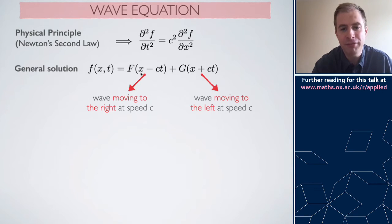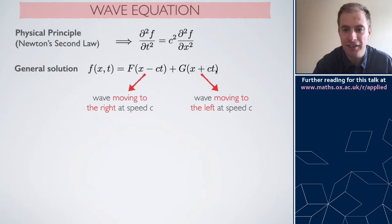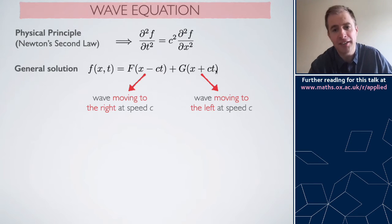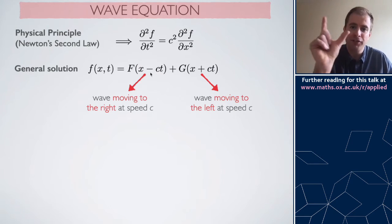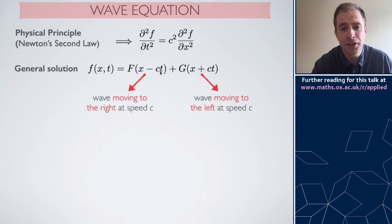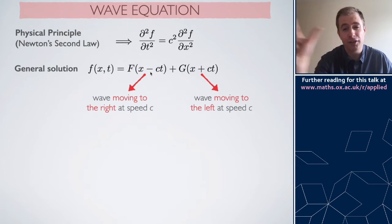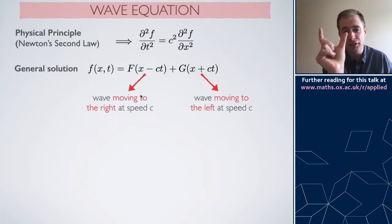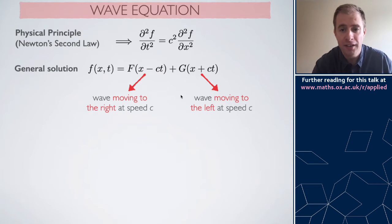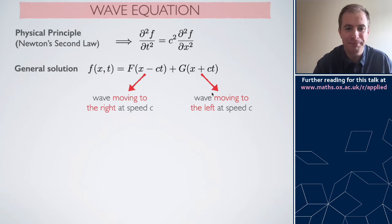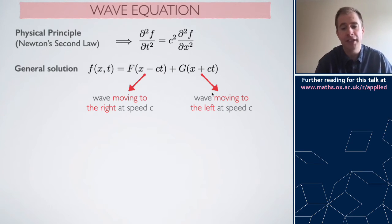There is a general solution of the wave equation that is surprisingly simple. The solution F(x,t) can be written as some function of (x − Ct) plus another function G of (x + Ct). Even if you haven't seen calculus yet, you can think about graphs being translated left and right: as time increases, Ct gets larger and translates the graph to the right — so F(x − Ct) corresponds to a wave moving to the right at constant speed C, while G(x + Ct) moves to the left.